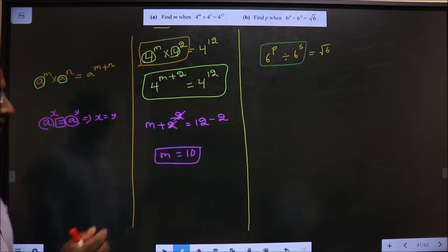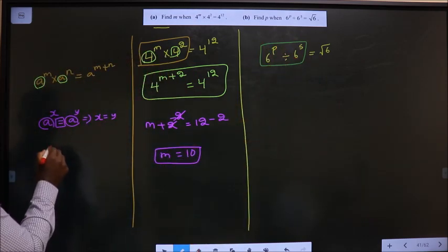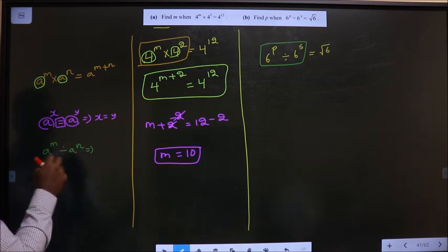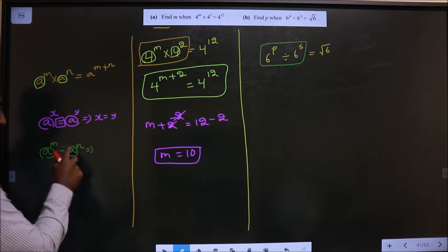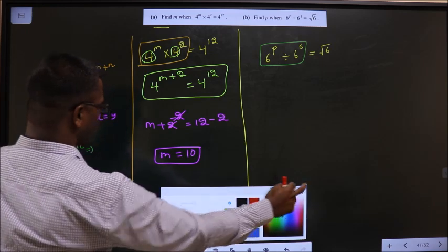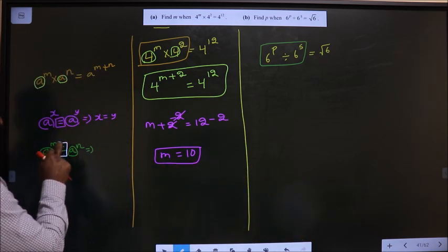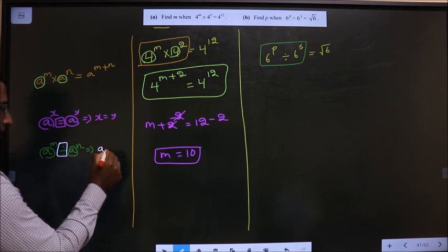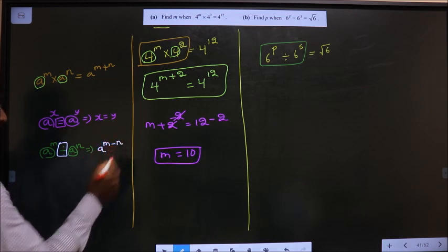For a^m / a^n, when the bases are same, it's division, so subtract the powers: a^(m-n).